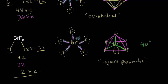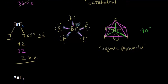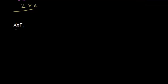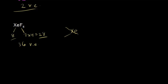Let's do one more example of six electron clouds: xenon tetrafluoride, XeF₄. Xenon is in group 8, so 8 valence electrons. Fluorine is in group 7, so 7 valence electrons times 4 gives me 28. 28 plus 8 gives me 36 valence electrons. Xenon goes in the center, bonded to 4 fluorines. We have represented 2, 4, 6, and 8 valence electrons, so 36 minus 8 gives me 28 valence electrons left over.